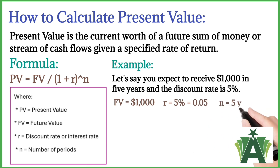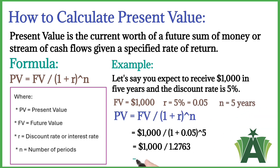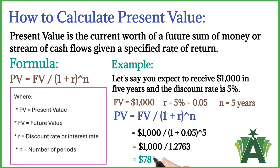So, the present value of $1,000 to be received in 5 years at a 5% discount rate is $783.53.